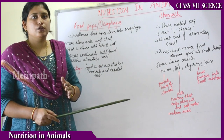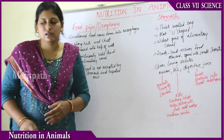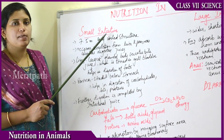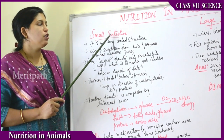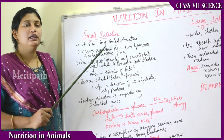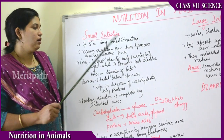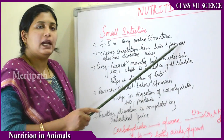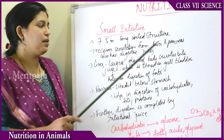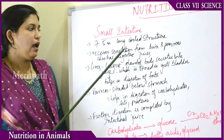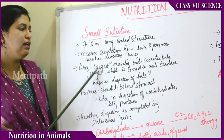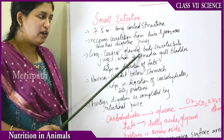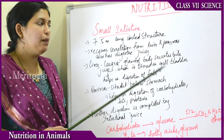From the stomach, food moves into the small intestine, where absorption of food occurs. The small intestine is a 7.5-meter-long coiled structure. It receives secretions from both the liver and the pancreas. The liver is situated above the abdomen and is the largest gland of the body; it secretes bile juice, which is stored in a sac-like structure called the gallbladder. Bile juice helps in the digestion of fats.